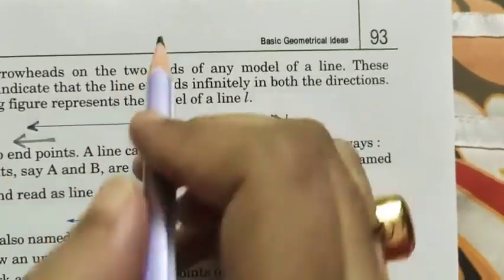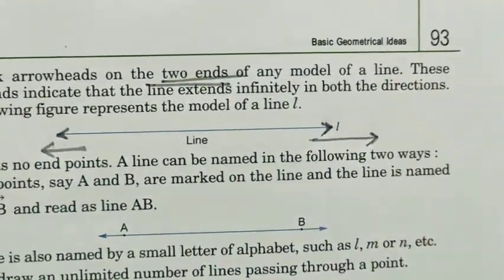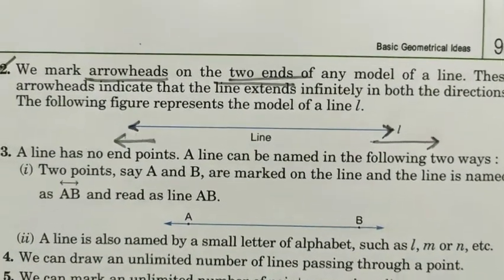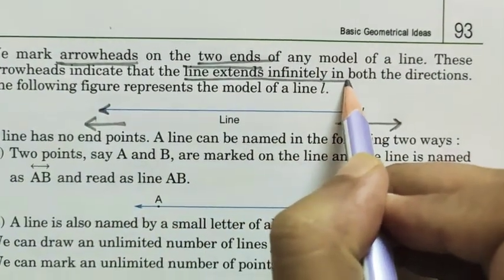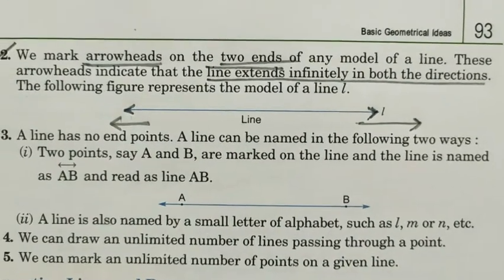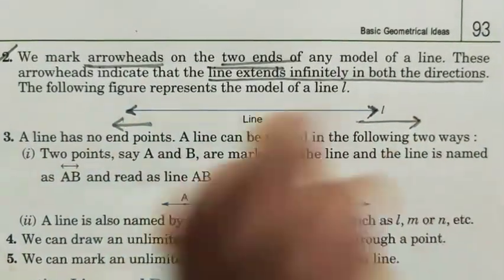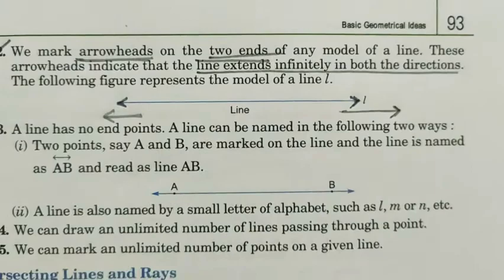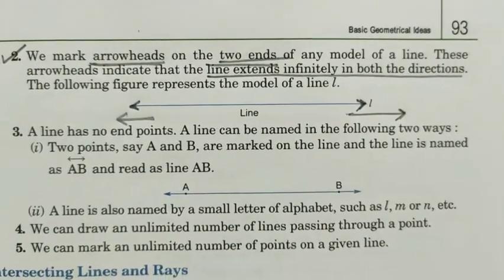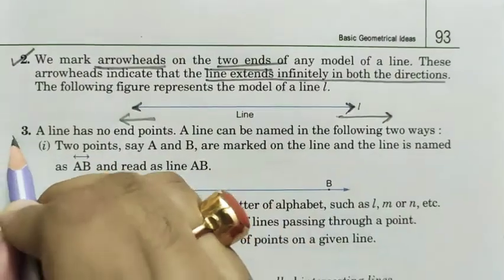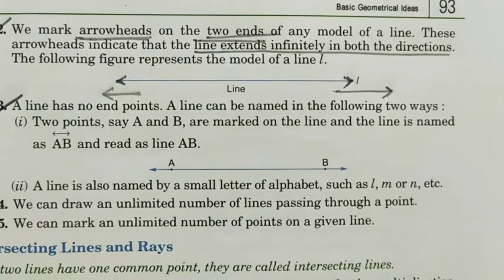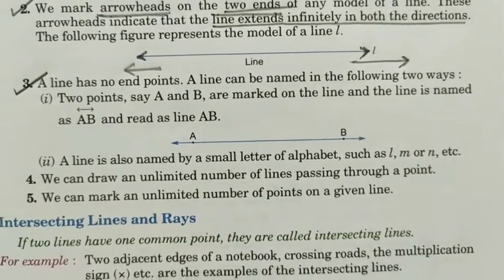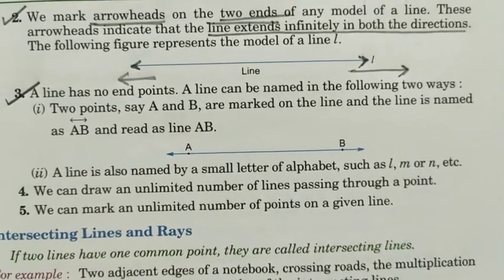Next point. We mark arrowheads on two ends of any model of line. As I said, we draw two arrowheads on the two ends of the line. What does that arrowhead indicate? That the line extends infinitely in both directions. Line extends infinitely in both directions. That's what it denotes. This side it extends, this side it extends. So we are putting two arrows to indicate this. Number three point. A line has no end point. End point means the point at which the line ends. There is no end point of a line. It extends endlessly.